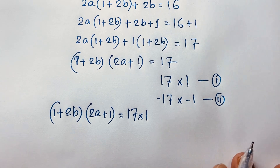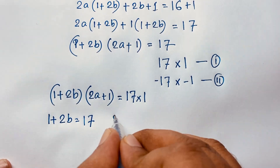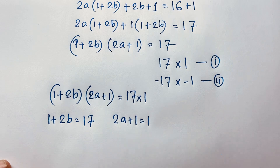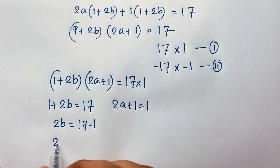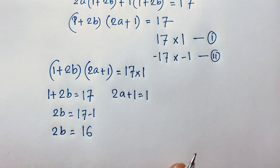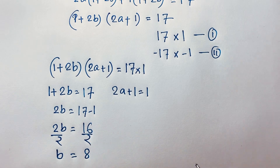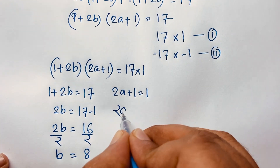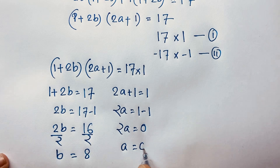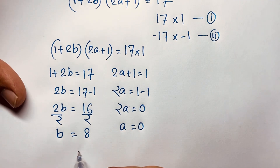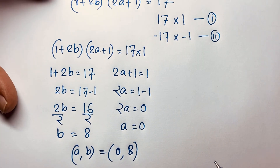So (1 plus 2B) times (2A plus 1) is equal to 17 times 1. This is our first case. In this case, 1 plus 2B is equal to 17 and 2A plus 1 is equal to 1. So 2B is equal to 16, which gives B is equal to 8. And 2A is equal to 0, then A is equal to 0. So we find A, B is equal to 0, 8.